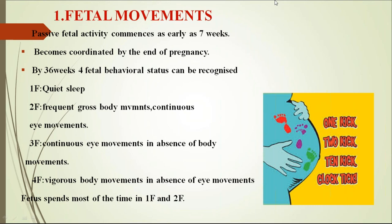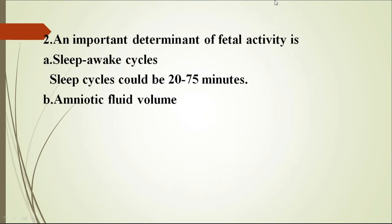The fetus spends most of its time in quiet sleep and frequent gross movements with continuous eye movements (patterns one and two). Fetal activity is determined by sleep-awake cycles, which should last 20 to 75 minutes, and by amniotic fluid volume. If amniotic fluid volume is adequate, the fetus can show good fetal movements.